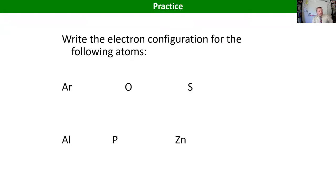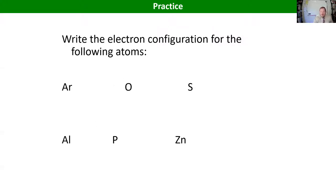We ended up talking about electron configuration the other day and we went with the general approach: we're going to follow the periodic table and use the row and the block to help us determine how many electrons can go into what types of orbitals. We did the electron configuration for oxygen and sulfur the other day — let's go ahead and do argon as practice.